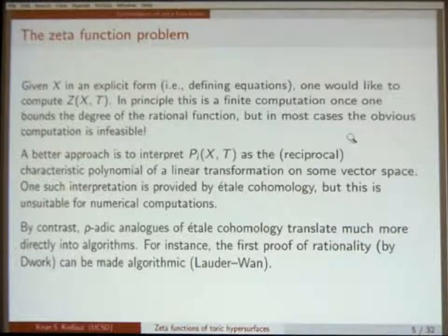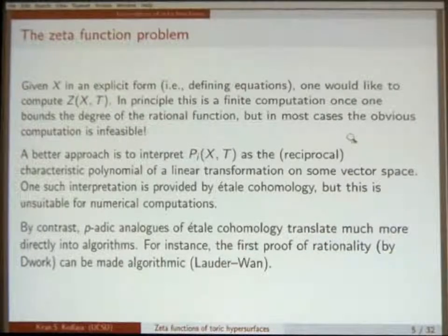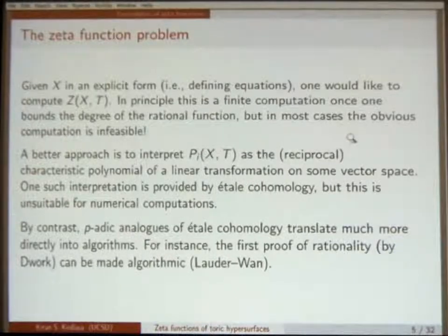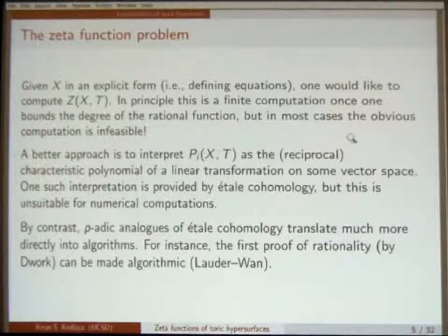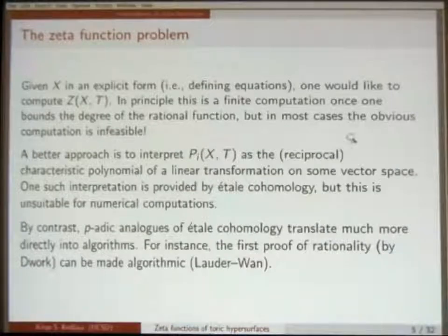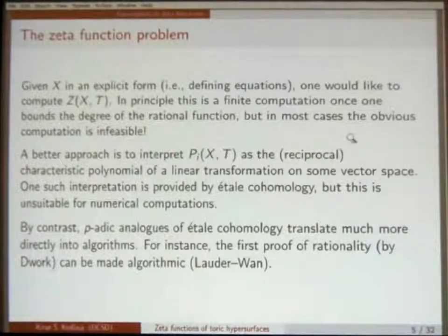Given X in some explicit form — you might also ask this question for X not given in an explicit form, like some moduli space or Shimura variety, but for the purposes of this talk I will be talking about X when it's given explicitly with defining equations. Given X in explicit form, one would like to compute the zeta function. In principle, once you bound the degree of the rational function, it's a finite computation, because you just need some coefficients, and you can get those coefficients by actually enumerating points over extensions of F_Q.